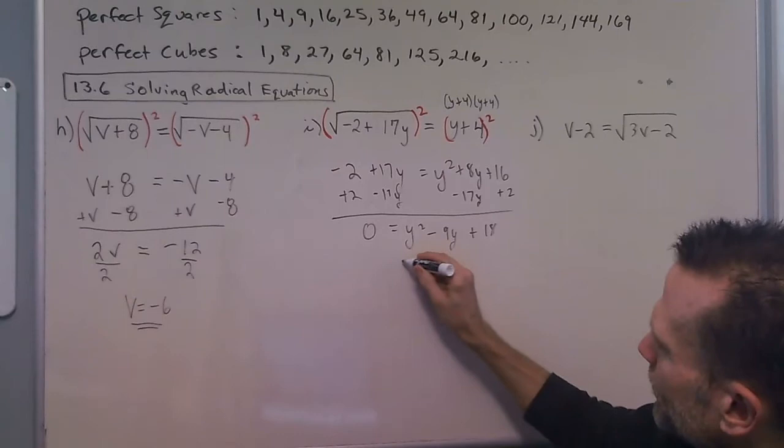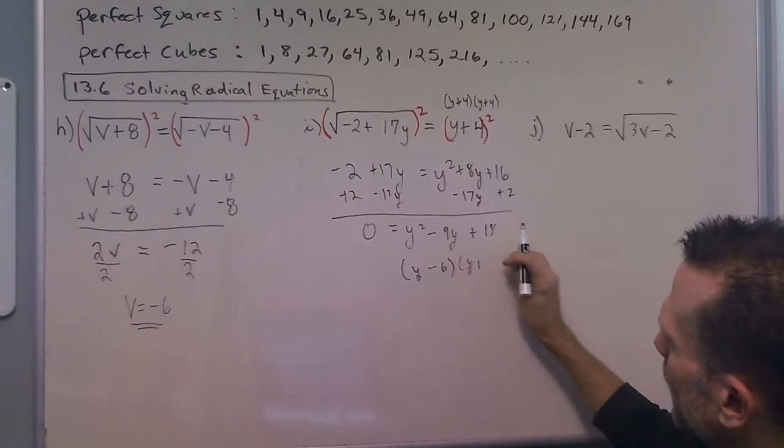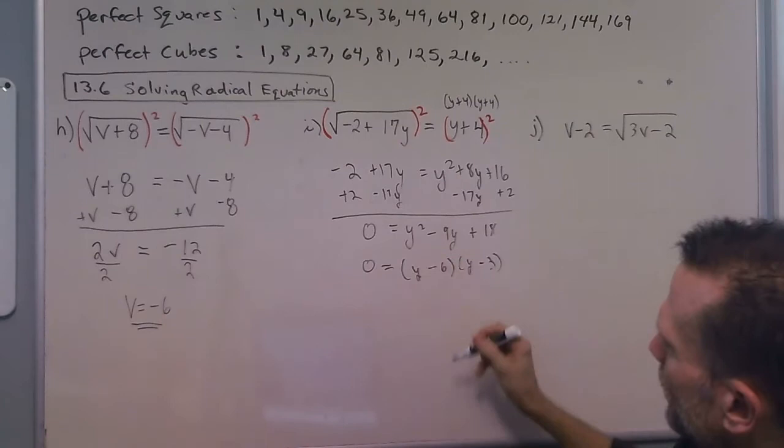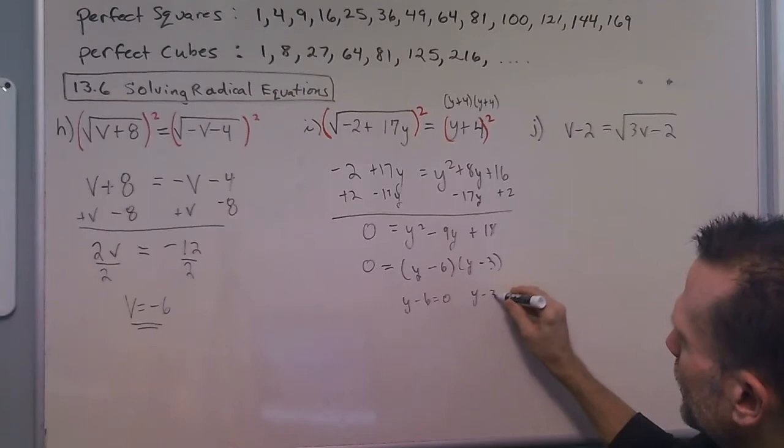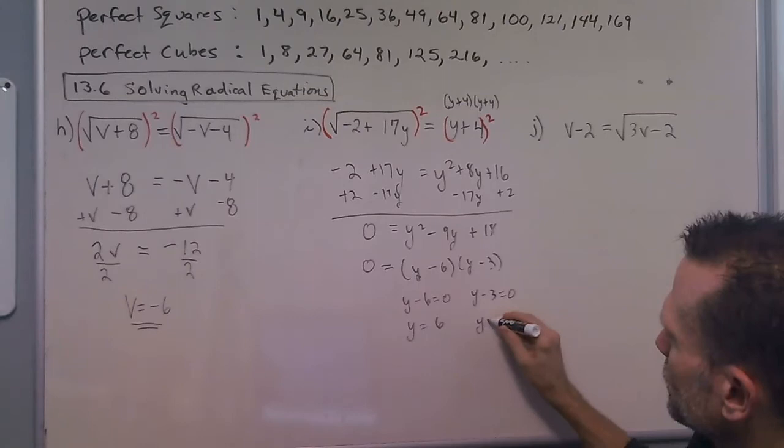Then we can factor this into y minus 6 and y minus 3, you can check that out, it'll work. And then we can use our zero product property, or some of you have a shortcut developed through this, and we get y equals 6, y equals 3.